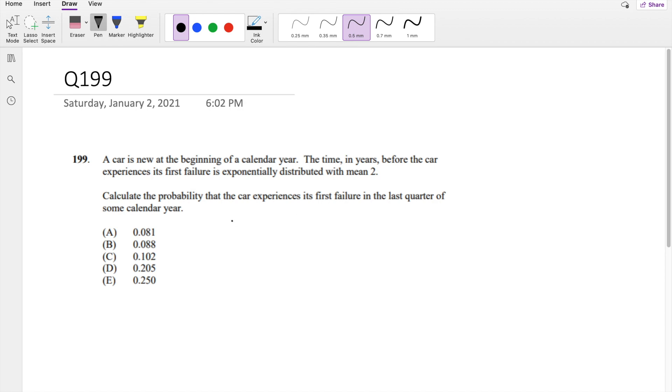Okay, assume you already attempted it, let's just dive right in. The time in years before the car experiences its first failure is exponentially distributed with a mean 2. So if it's exponentially distributed, we know it follows 1 over lambda e to the negative t over lambda, where lambda is equal to 2. So you know that the probability distribution is going to be 1 over 2 e to the negative t over 2.